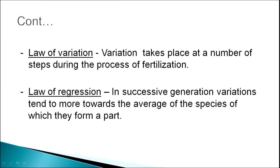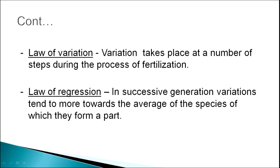Besides this, there is also the law of variation — it is not always necessary that children will be similar to their parents. Variation takes place at a number of steps during fertilization: a part of the chromosome may be duplicated, deleted, or inverted, resulting in differences between child and parents. Then there is the law of regression, that in successive generations the characteristics become more towards the average of the species. For example, if one individual is very tall, his sons and grandsons may not be very tall — they may obtain the average height of human beings.